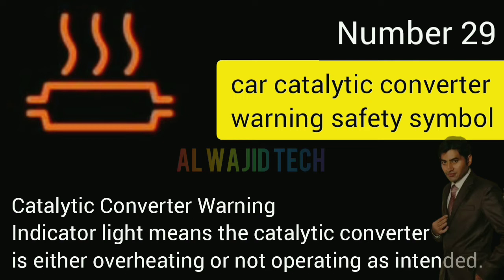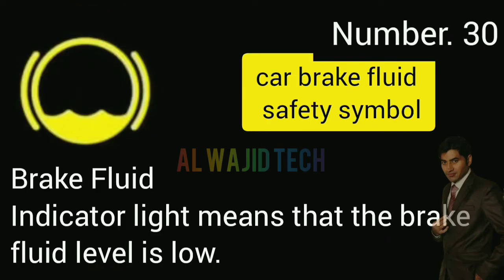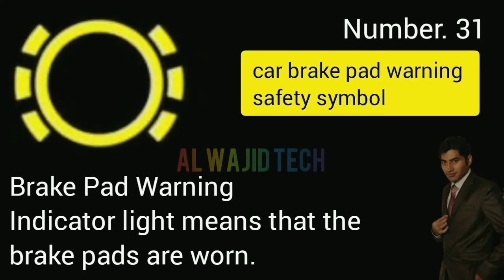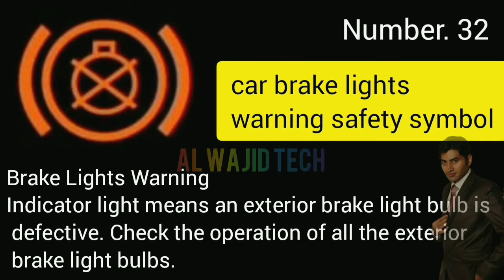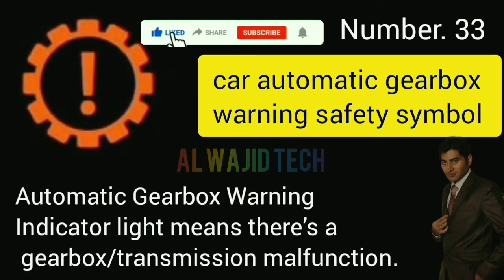Number twenty-nine: Car catalytic converter warning. The catalytic converter warning indicator means the catalytic converter is either overheating or not operating as intended. Number thirty: Car brake fluid. The brake fluid indicator means the brake fluid level is low. Number thirty-one: Car brake pad warning. The brake pad warning indicator means the brake pads are worn.